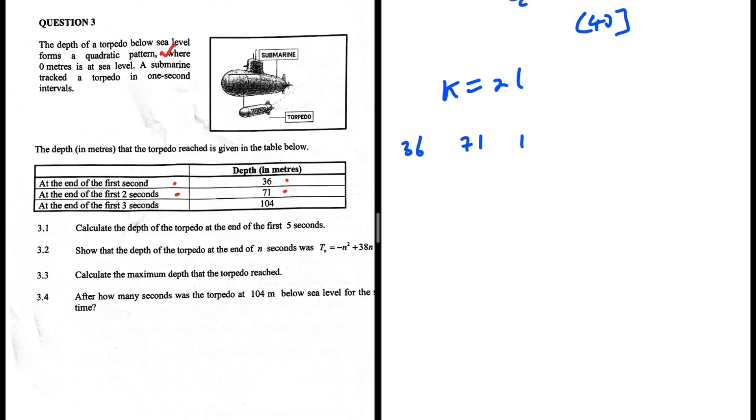We are told that it is quadratic, so we are going to find the difference. 71 minus 36 equals 35. 104 minus 71 equals 33. The difference is minus 2. So 33 minus 2 is 31. 104 plus 31 equals 135.